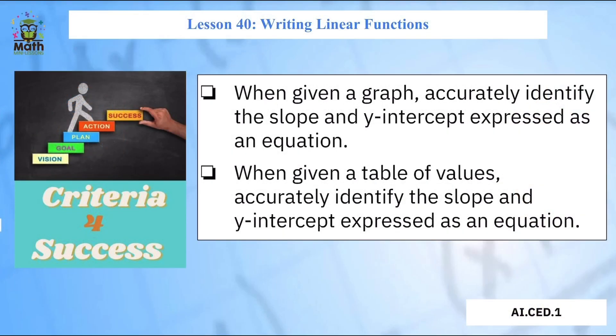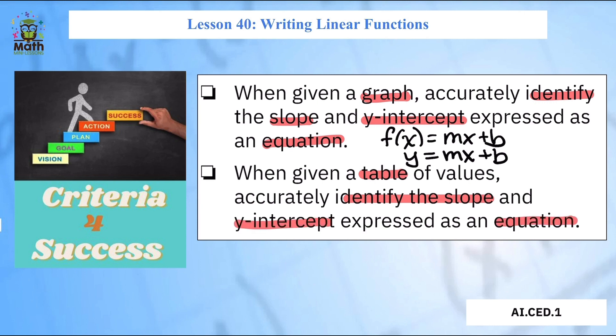Welcome back, this is lesson 40. We're going to write linear functions when given a graph. Here are our look-fors in the lesson: if you get a graph that we can accurately identify the slope and the intercept and express it as an equation, this could either be as a function f of x or as an equation y equals. And if we're given a table, we can use the values to identify the slope and the intercept and write an equation. So we're really just putting all the pieces together.